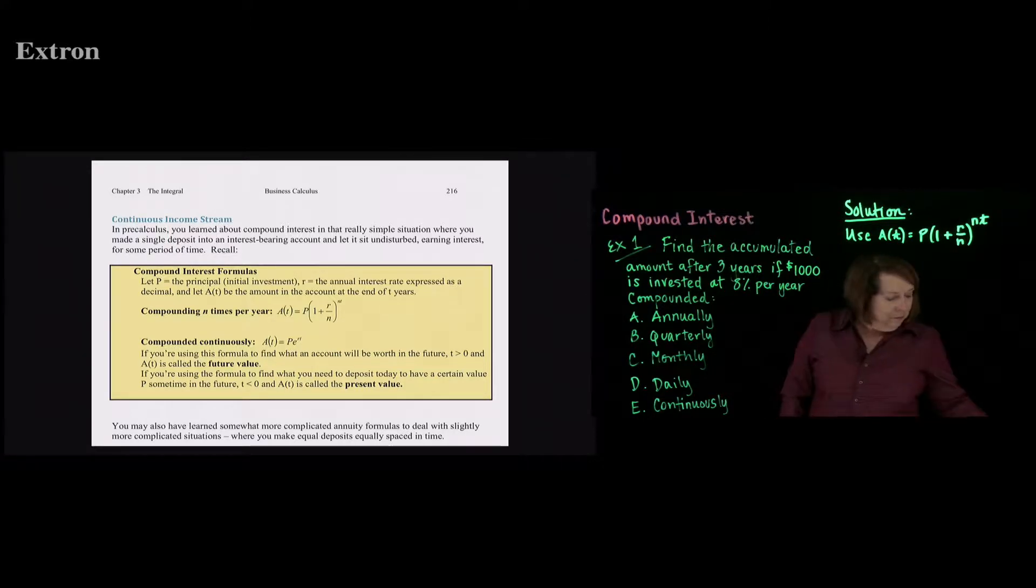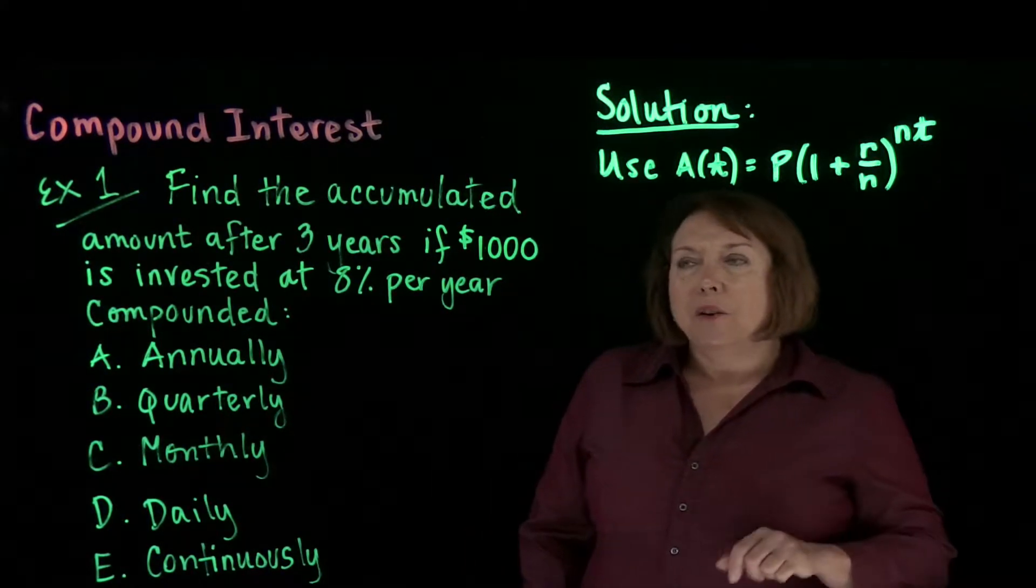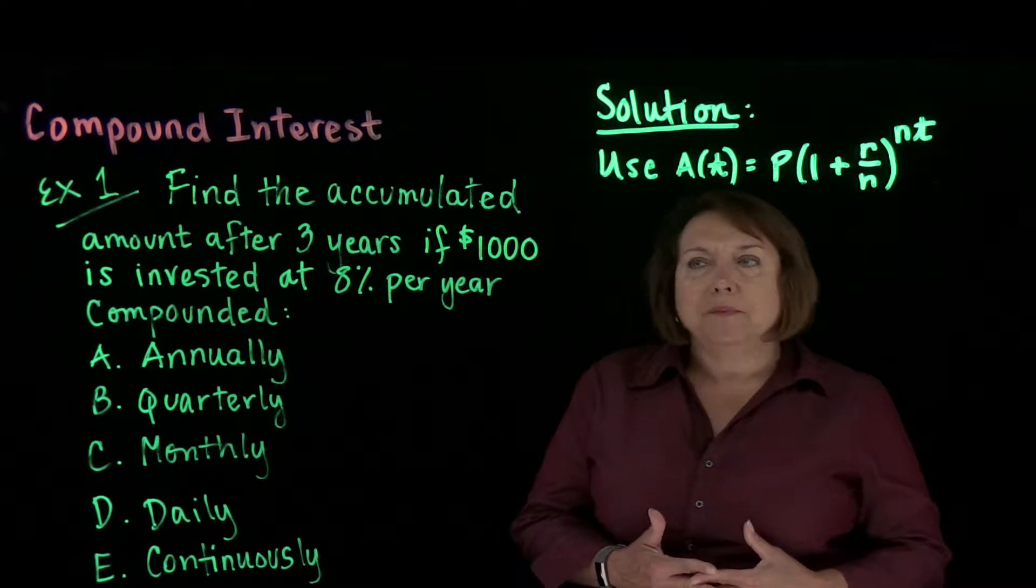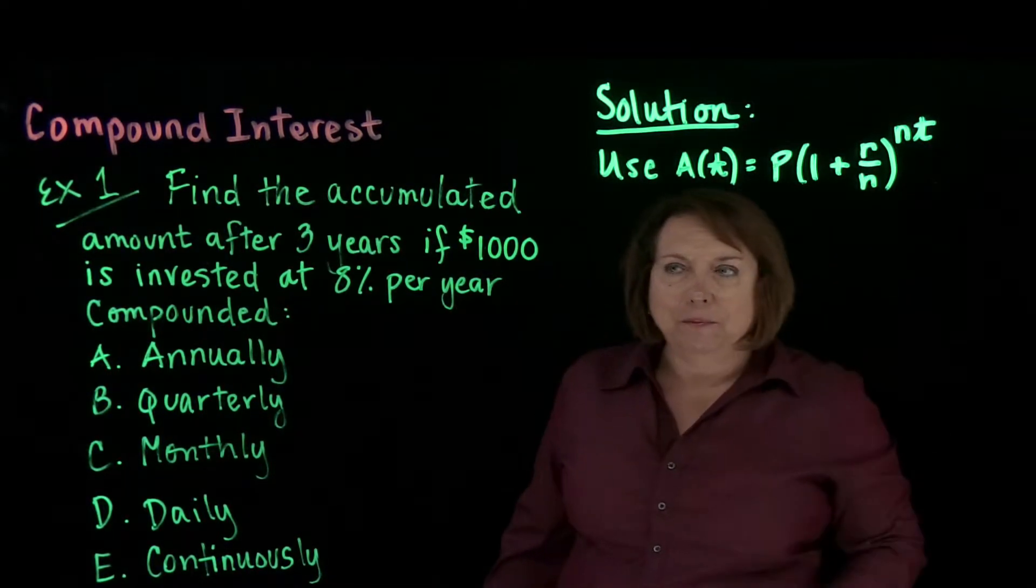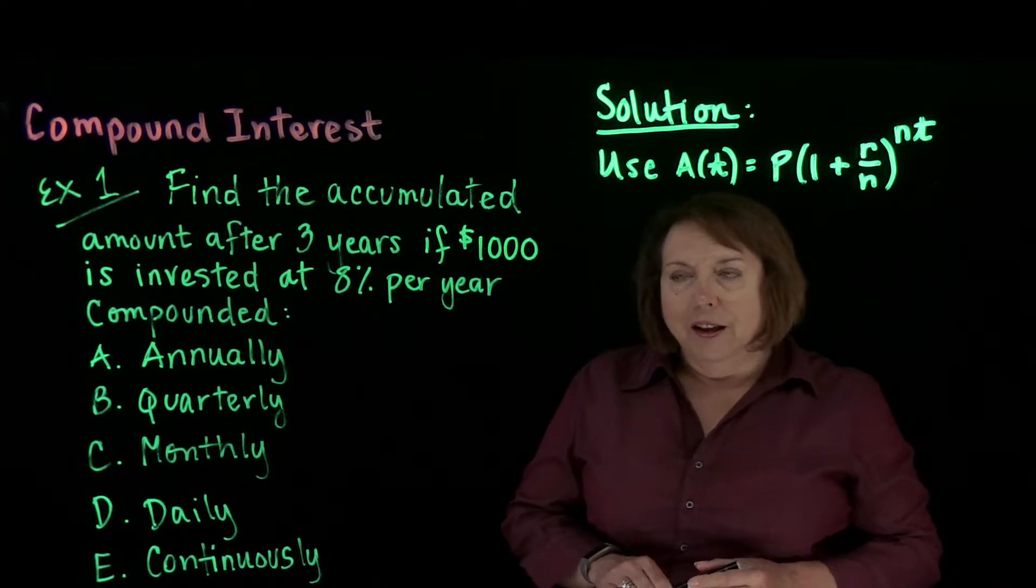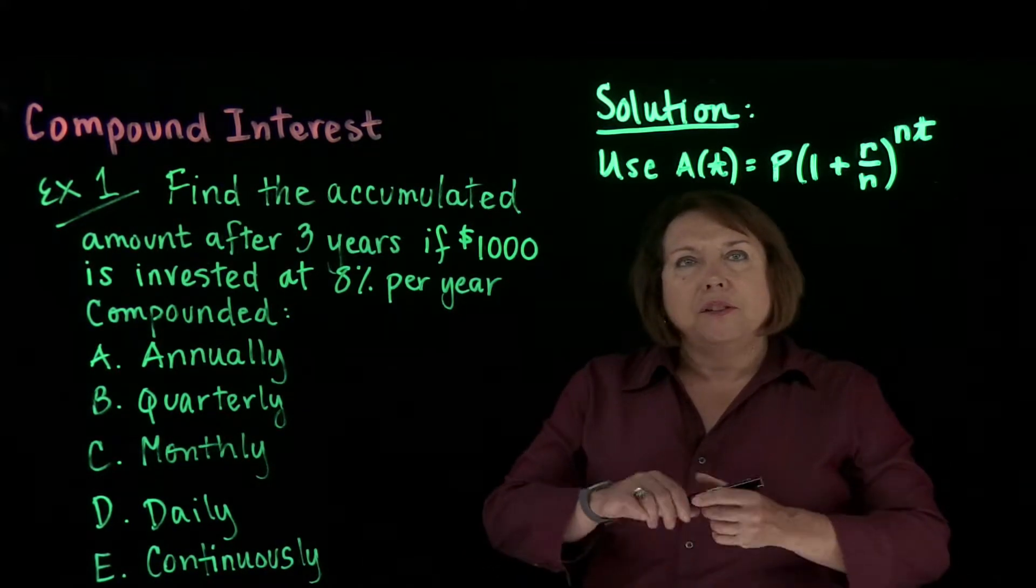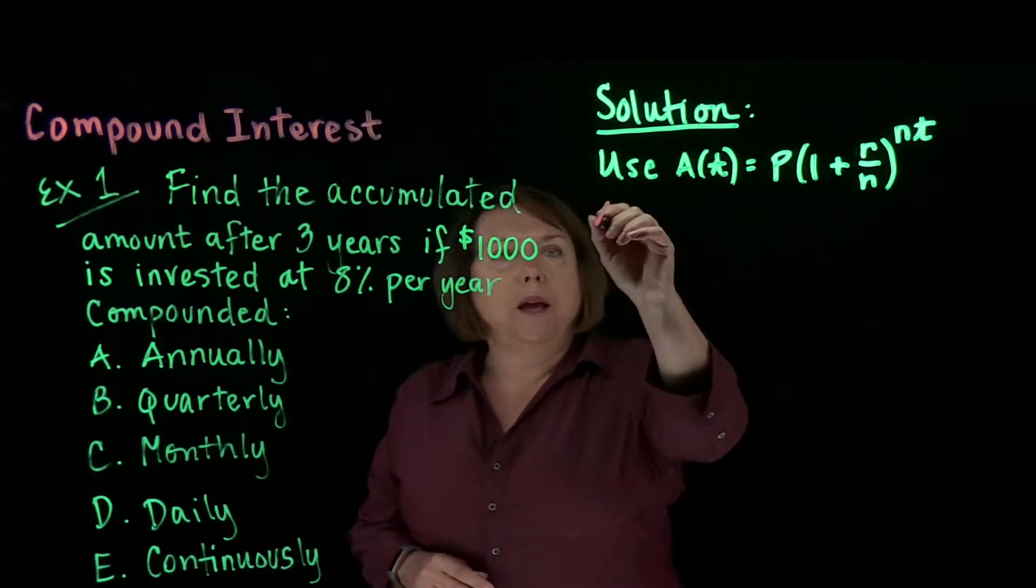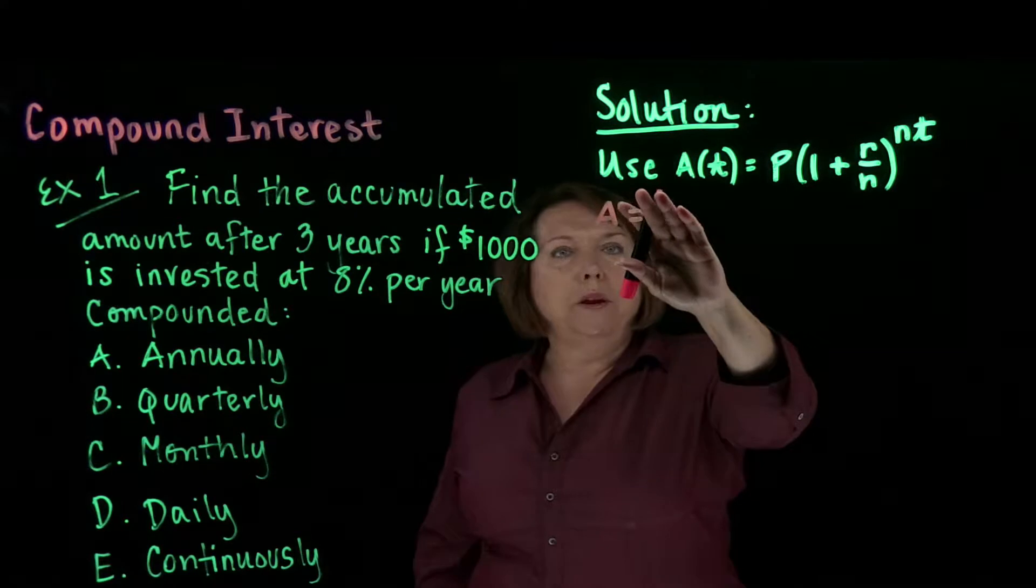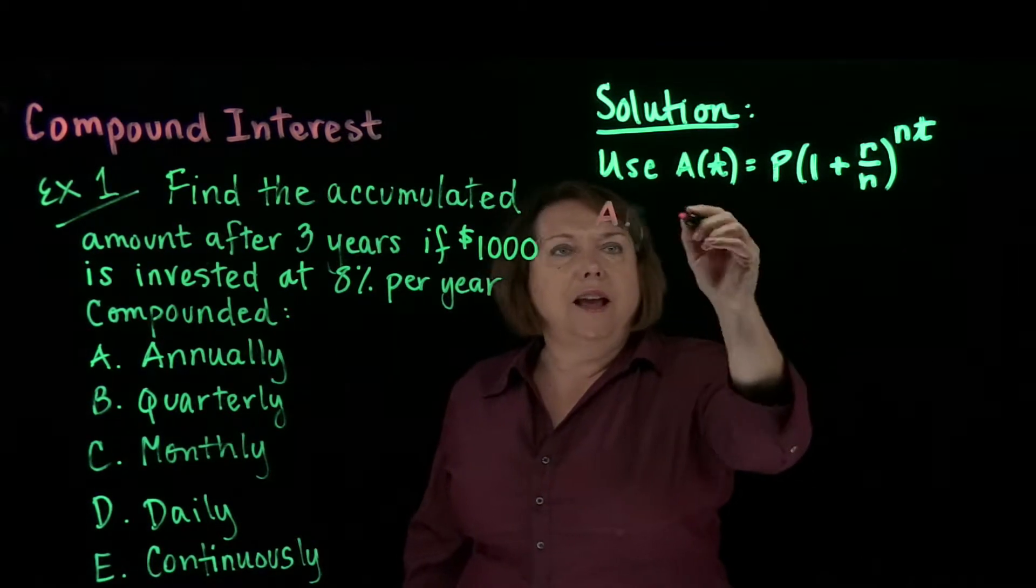So let's look at this example. I want to find the accumulated amount, which is our A(t), our function value, after three years if $1,000 is invested at 8% per year and then compounded in different ways. So let's look at A. A is annual compounding. That means that the number of compounding periods is going to be equal to 1. So N equals 1.